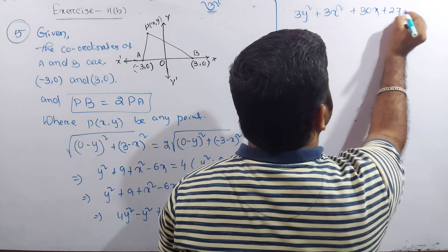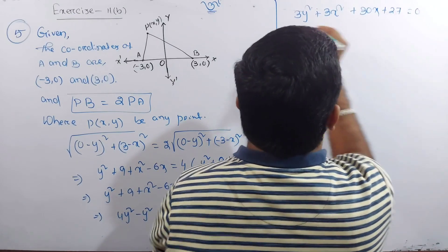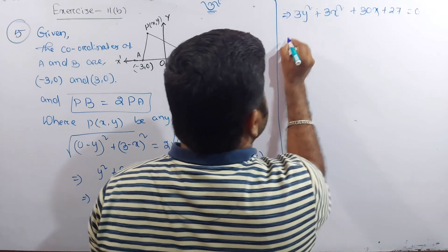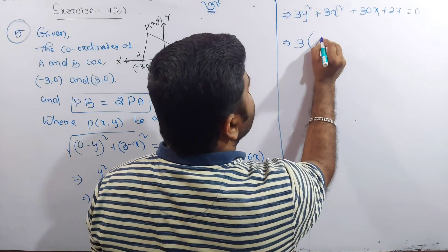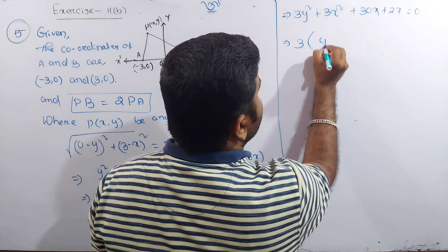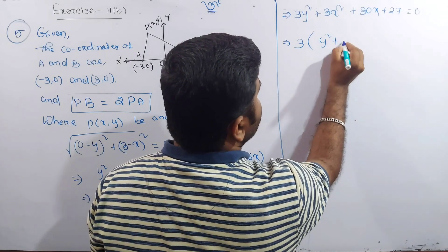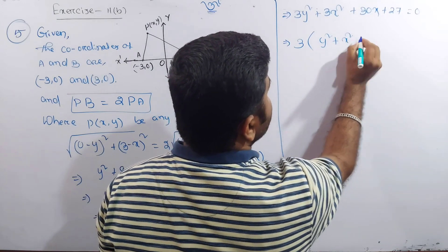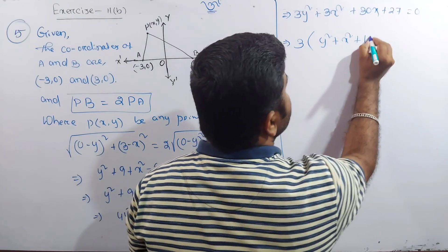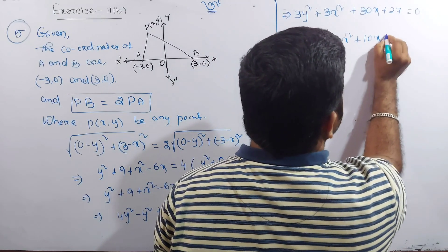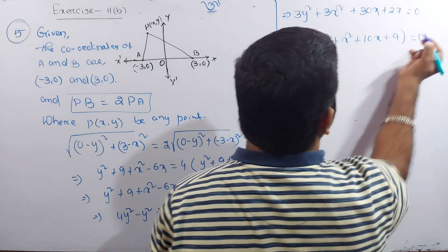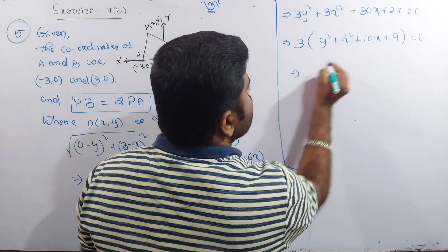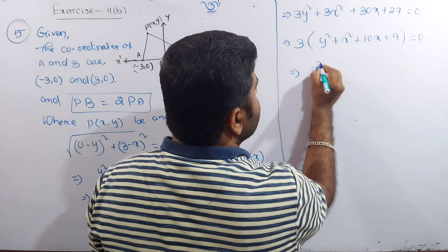Taking 3 as common factor: x² + y² + 10x + 9 = 0. This is the equation of the locus.